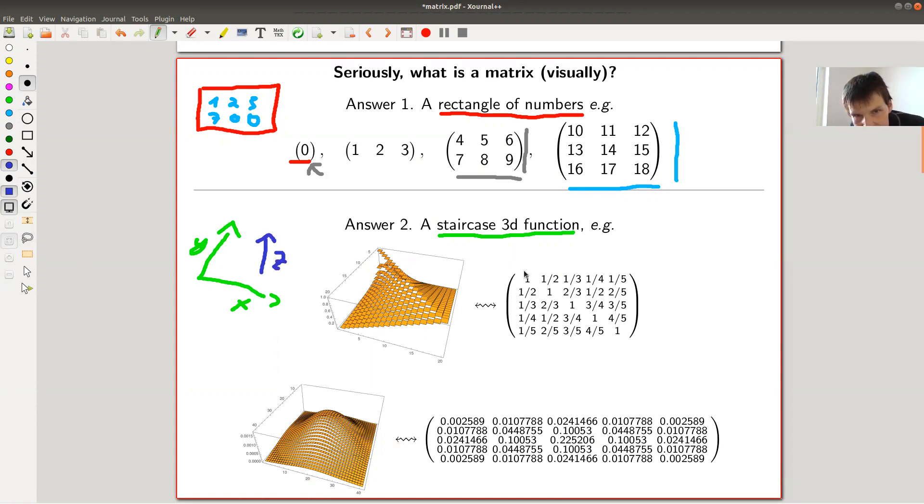For instance, this one here has ones on the diagonal. In the staircase picture, you see this here is a diagonal and it's of height one. The matrix lies like this here, and you see what's going on. It's much easier to see in this picture because it kind of decreases as you move away from the diagonal. It decreases in a very nice way.